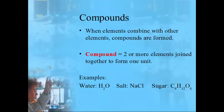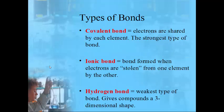Moving on from elements, whenever you have elements combining together you have what's called a compound — two or more elements joined together, with no upper limit. Common examples include water (H₂O, hydrogen and oxygen), salt (sodium chloride, sodium and chlorine), and sugar (carbon, hydrogen, and oxygen — three elements). It has to be at least two elements to be considered a compound.